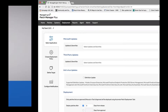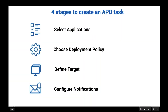Let me click on Automate Task. Here you have an option to create a task for your Windows machines, one for your Mac machines, and another for your Linux machines. Let me click on Windows. We have four simple stages where you furnish the details and we create an APD — Automate Patch Deployment — task for you.